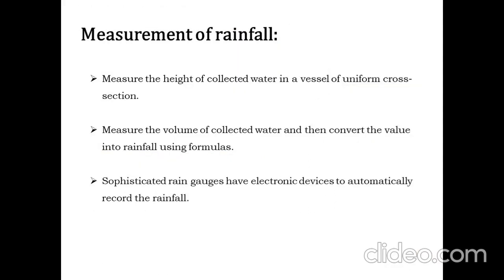Getting into the measurement of rainfall, we have different ways of measuring it. You can simply measure the height of the collected water in a vessel of uniform cross section, or you can measure the volume of collected water and convert the value into rainfall using formulas, or there are sophisticated rain gauges with electronic devices that automatically record the rainfall. We preferably use the first type because it is easier. Here, we just calculate the height at which the water is present in the rain gauge using an ultrasonic sensor, which gives the rainfall measurement.